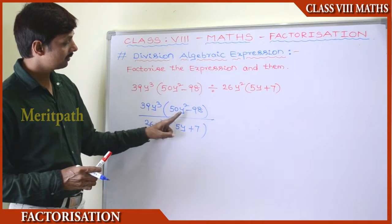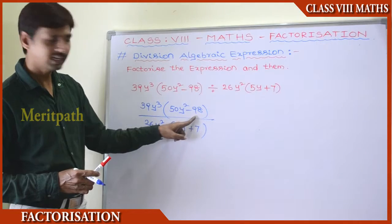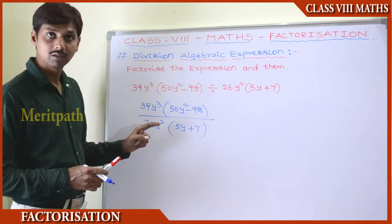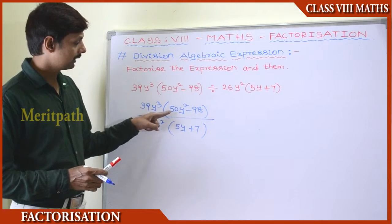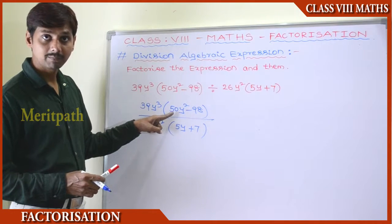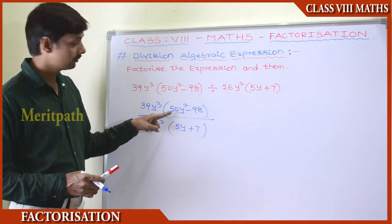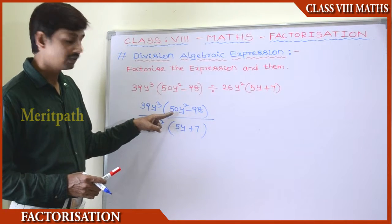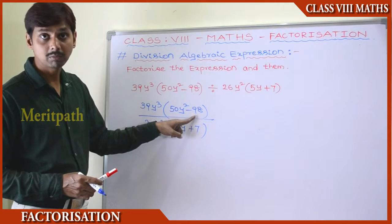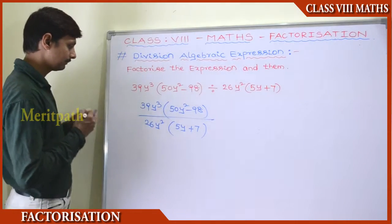In this expression we can observe that in 50y² − 98, there is a common factor of 2, because 50 is divisible by 2 and 98 is also divisible by 2. So we can take out this factor of 2.